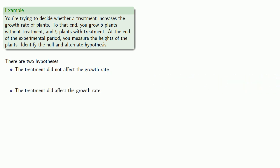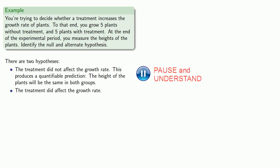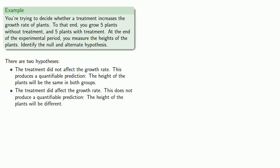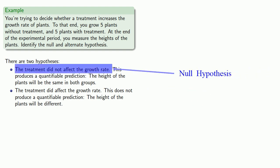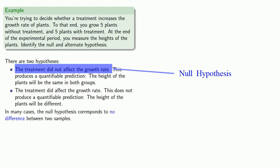The first hypothesis produces a quantifiable prediction: the height of the plants will be the same in both groups. The second hypothesis — the treatment did affect the growth rate — does not produce a quantifiable prediction; the best we can say is the height of the plants will be different. Notice that the null hypothesis says there is no difference between the two samples. And in general, in many cases, the null hypothesis corresponds to no difference between the two samples.